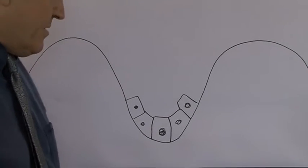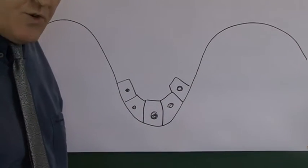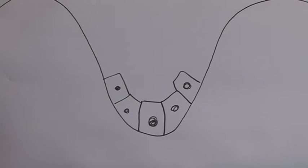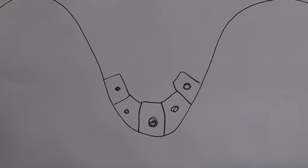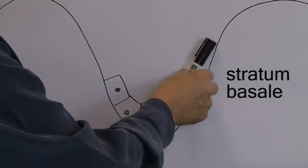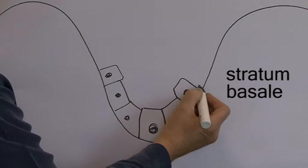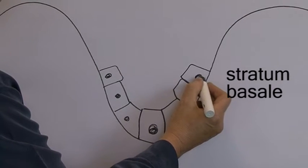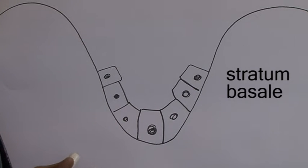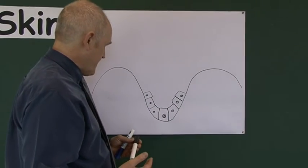These keratinocytes are mitotically active — from time to time they will mitotically divide, producing two daughter cells. That's why this basement layer is sometimes called the germinative layer. It's actually called the stratum basale, and it follows around the basement membrane zone.